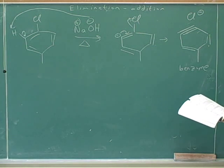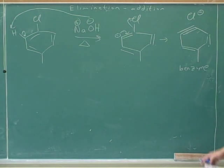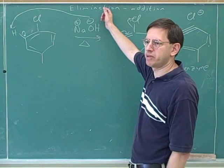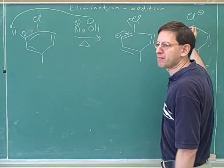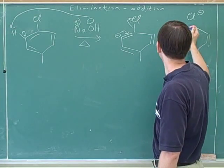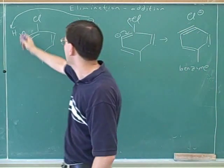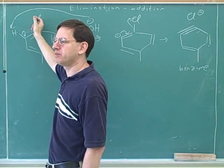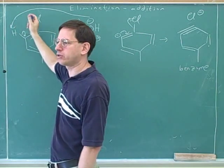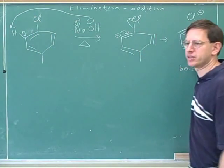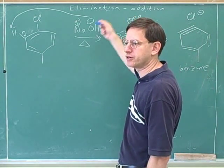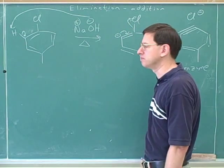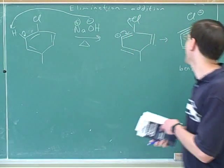Benzyne reactions are elimination-addition reactions. Notice that what we've done so far is the elimination step — we formed a new pi bond, specifically a triple bond, by eliminating the hydrogen and the chlorine. That's what forms this pi bond. It's a two-step elimination: first you lose the hydrogen, then you lose the chlorine.